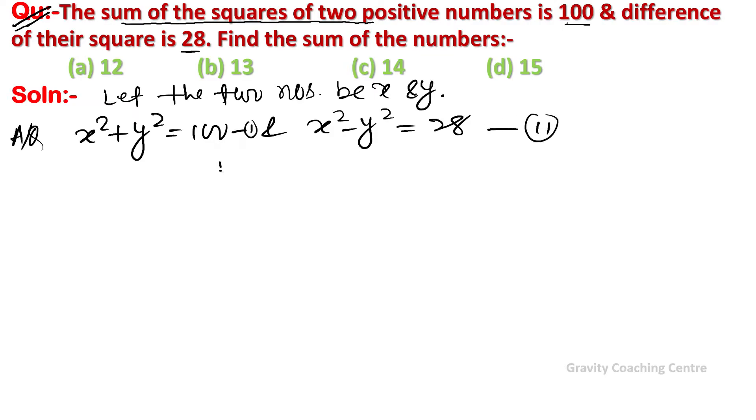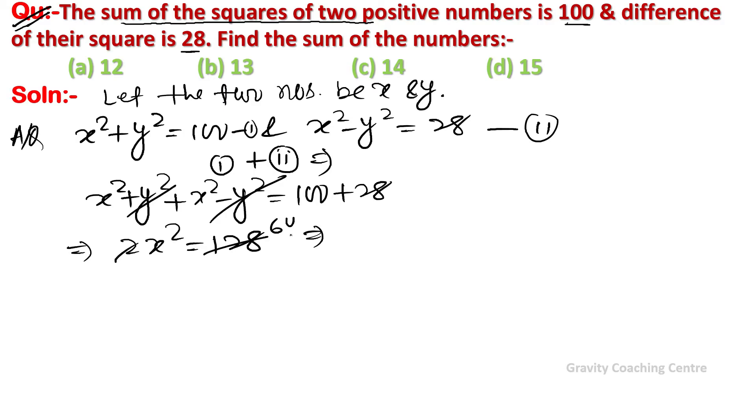Now adding equations 1 and 2, so we get x² plus y² plus x² minus y² equal to 100 plus 28. Here y² and y² cancel, so 2x² equal to 128. Cancel by 2, we get 64. So x equal to under root 64, equal to 8.